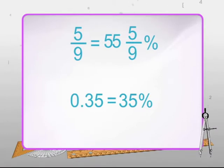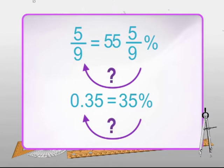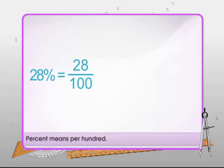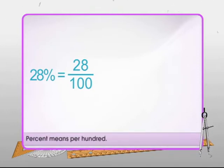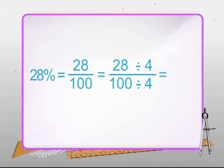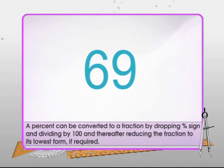We have seen how fractions and decimals can be converted to percentages, but what if we need to convert percentages to fractions or decimals? A given percentage can be converted to a fraction by dividing it by 100, simply because percent means per 100. For example, 28% = 28/100, which reduces to its simplest form as 7/25. Thus, 28% is equivalent to the fraction 7/25.